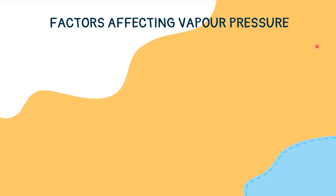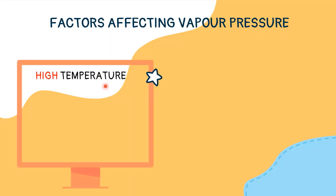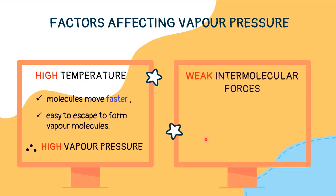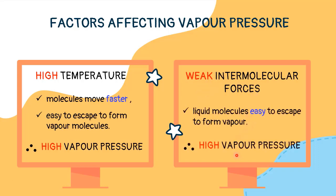Vapor pressure is a measure of the tendency of a material to change its state from liquid to gas when the temperature increases. It indicates the rate of evaporation of a liquid and is closely related to the tendency of particles to escape from the liquid state. As the temperature of a liquid increases, the molecules' kinetic energy also increases, so the number of molecules transitioning into vapor increases, thereby increasing the vapor pressure. In relation to high temperature, the strength of intermolecular forces decreases, making it easier for liquid molecules to escape to vapor state, hence the vapor pressure is high.